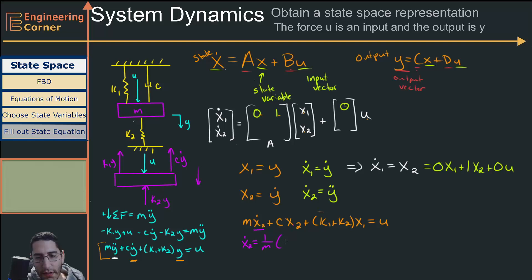So we're going to have minus k1 plus k2 times x1 minus c times x2 plus u.